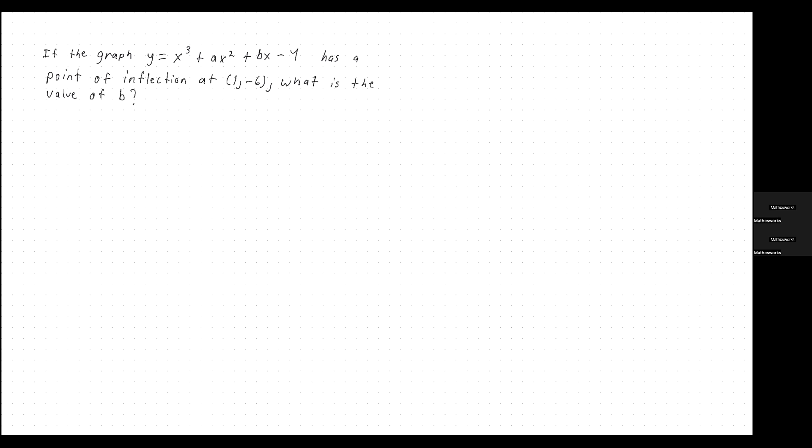So let's first read the question. If the graph y is equal to x cubed plus ax squared plus bx minus 4 has a point of inflection at (1, -6), what is the value of b? So we need to find this term right here, the b.